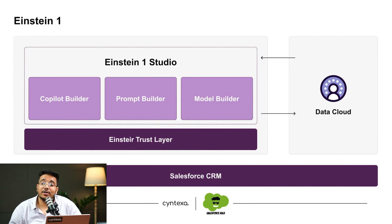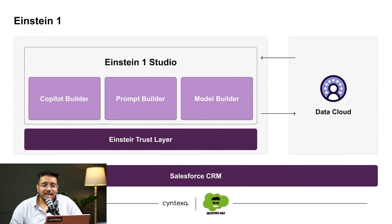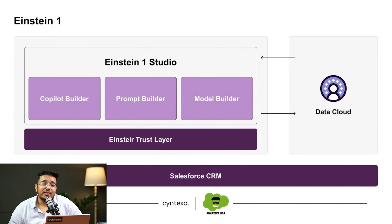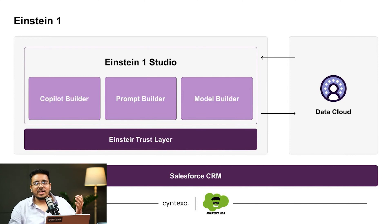Copilot Builder is a conversational chatbot which allows you to do all sorts of things: summarize a record, generate field values, and have additional actions assigned to it — whether it be flows or Apex. The last piece in Einstein One Platform is Data Cloud integration. Data Cloud and Einstein One are deeply connected and integrated together. You can use data from Data Cloud to train your own model in Model Builder, pulling from different platforms both outside and inside Salesforce.